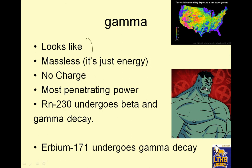Gamma looks like this. It's massless — it's just energy. It has no charge. It has the most penetrating power. If I tell you radon-230 undergoes beta and gamma decay: radon is Rn, 230 is the mass, and radon from the periodic table is 86. If it does gamma decay — zero over zero — how does the mass change? It doesn't. How does the number of protons change? It doesn't. That means I just get radon back, but it's not so overly energetic. No charge, massless, and it has the most penetrating power.